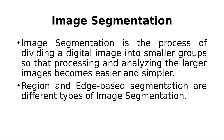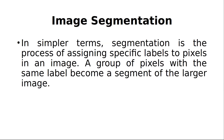There are two different types of image segmentation. One is called region-based image segmentation and another one is edge-based segmentation. Each and every segmentation is assigned a label. Segmentation is the process of assigning a specific label to each pixel in an image.